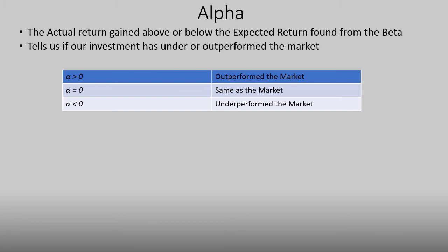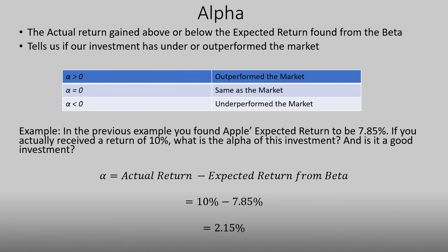Let's see how alpha is calculated. In a previous example, we found Apple's expected return to be 7.85%. If you actually received a return of 10%, what is the alpha? Alpha equals actual return minus expected return from beta: 10% minus 7.85% equals 2.15%. We have a positive alpha, meaning this portfolio is generating more money than the market portfolio. This isn't going to last forever, and it is very difficult to consistently generate a positive alpha, but in this case, that is what we have.